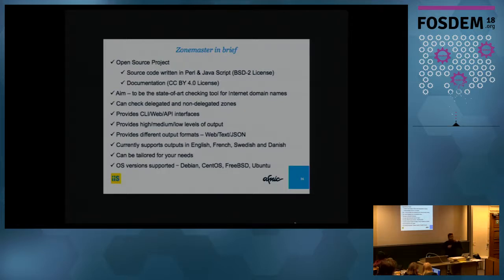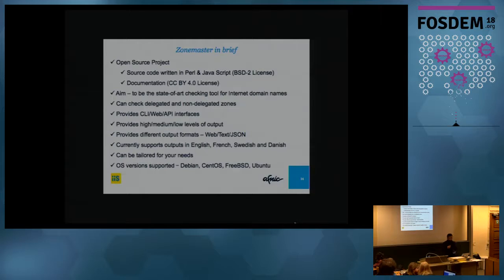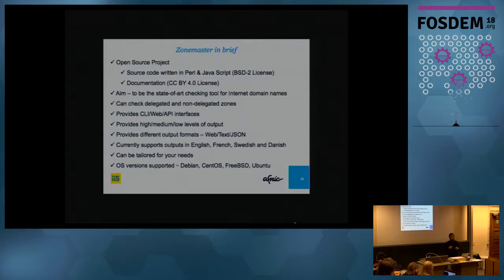There are three types of interfaces: CLI, web, and API. We can have different levels of output — high, medium, and low — and the output can be in HTML, text, or JSON. We currently support four languages: English, French, Swedish, and Danish, and you can also customize it according to your needs. As of now, we support four operating systems: Debian, CentOS, FreeBSD, and Ubuntu, though not all versions may be fully supported yet.